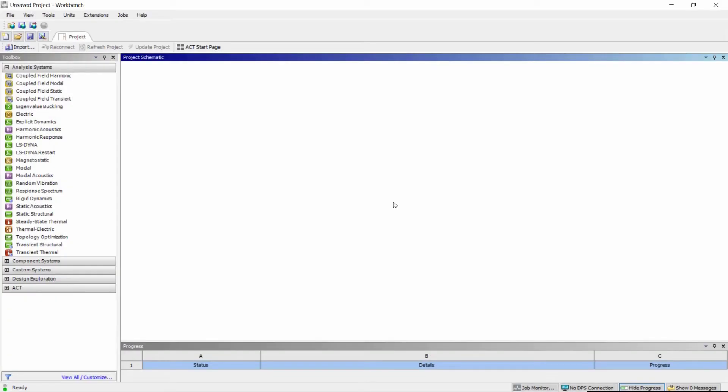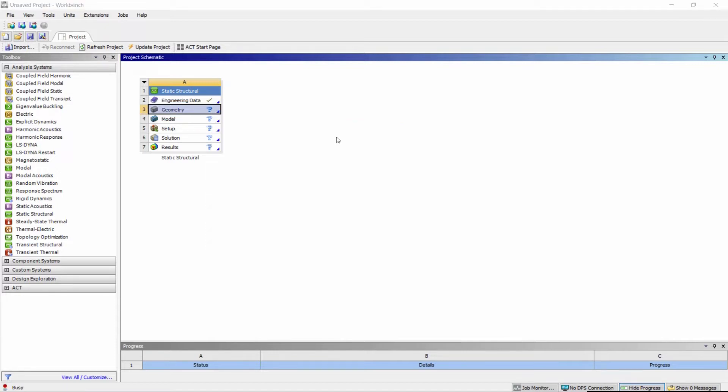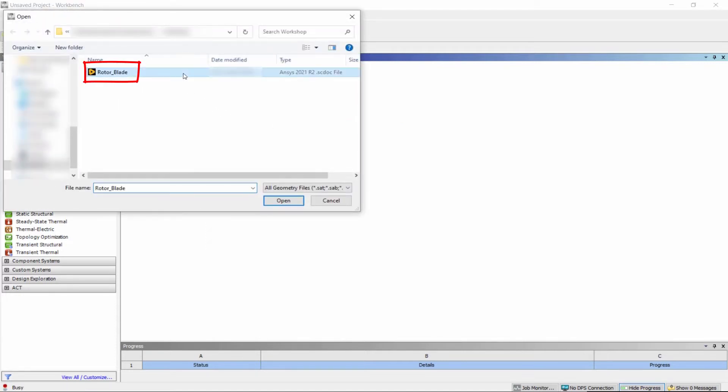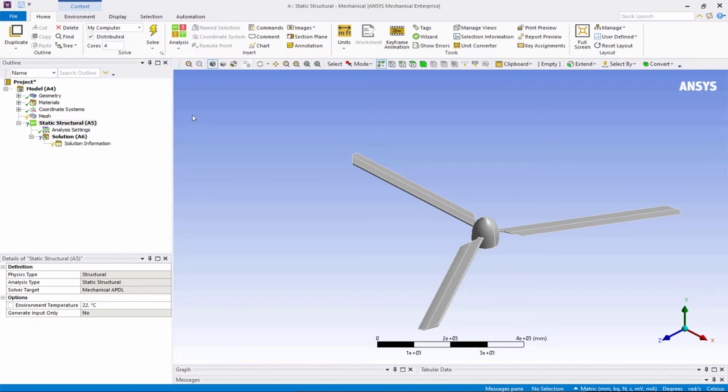So, let's proceed with this example. First, drag and drop static structural system on the project page. Then right-click on the geometry cell, import geometry, browse and pick the file named Rotor Blade SC Dock. Then double-click on the model cell to open ANSYS Mechanical.